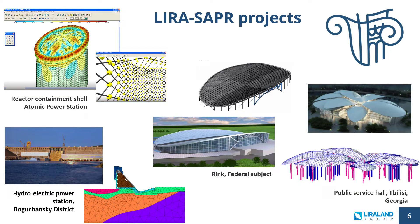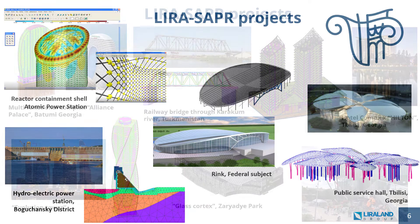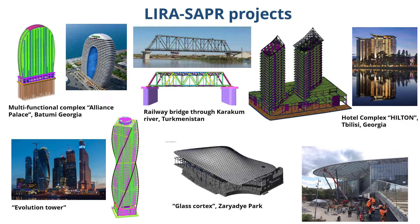With an extensive finite elements library, the program can solve a wide range of problems, such as bridges, silos, retaining walls, tunnels, and civil and industrial buildings. With LIRA-SAPR, a lot of structures have been constructed, including complex ones — for example, protective shells of nuclear reactors, hydroelectric power plants, indoor ice arenas, government institutions in Georgia, multi-functional and hotel complexes in Georgia, a railway bridge in Turkmenistan, and many different structures in Kyiv.